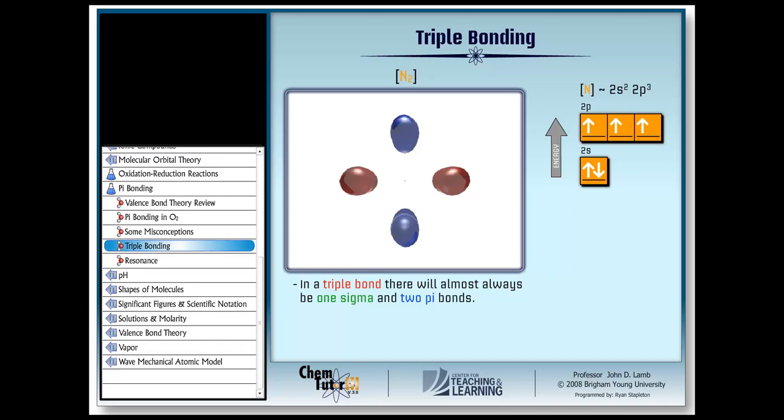And what about nodes? Well, as I'm sure you guessed, each pi bonding electron cloud has its own planar node. They're 90 degrees apart and they look like this.